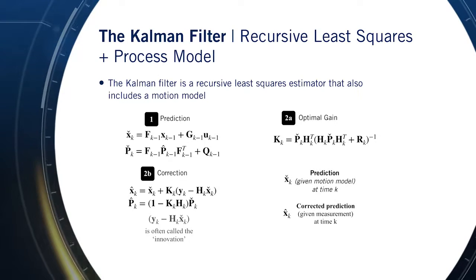In our notation, the hat indicates a corrected prediction at a particular time step, whereas a check indicates a prediction before the measurement is incorporated. If you've worked with the Kalman filter before, you may also have seen this written with plus and minus signs for the corrected and predicted quantities, respectively.